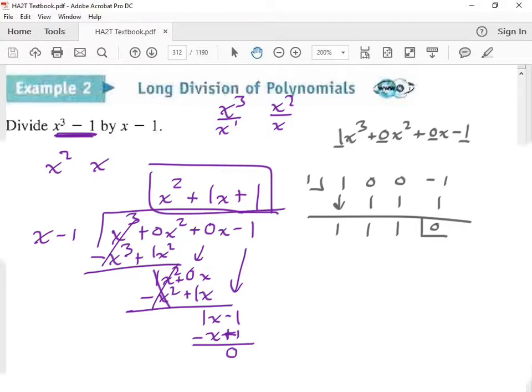This looks exactly like our answer over here. So you check it out. We had our remainder, then constant, x term, x squared term. It always goes like that. So we have no remainder.